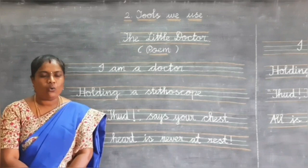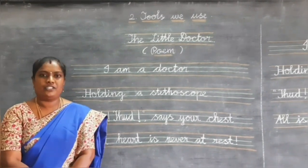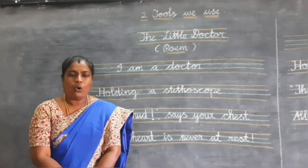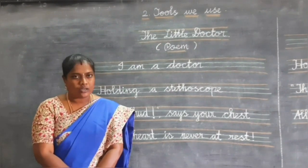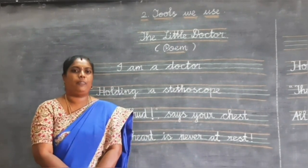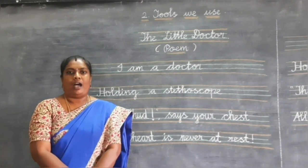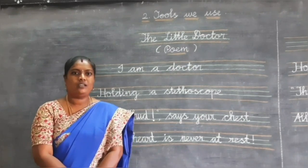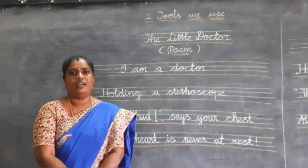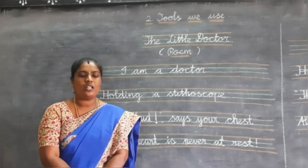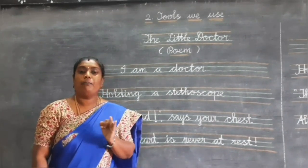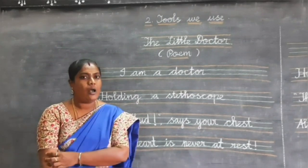Dear children, now you are going to learn the poem, 'The Little Doctor,' in Unit 2: Tools We Use. Who is a doctor? Doctor is a qualified person who gives treatment for the ill. I hope you all visit the doctor. What about the things a doctor has in the room? BP apparatus is used to check blood pressure.